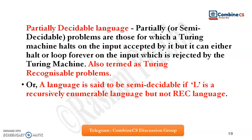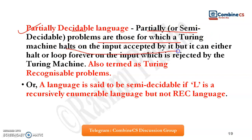Moving to the next topic: what is partially decidable? Partially decidable is also known as semi-decidable. Semi-decidable problems are those for which a Turing machine halts on the input accepted by it, but it can either halt or loop forever on the input which is rejected by the Turing machine.